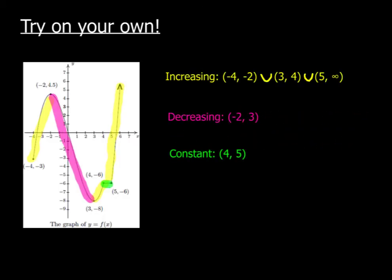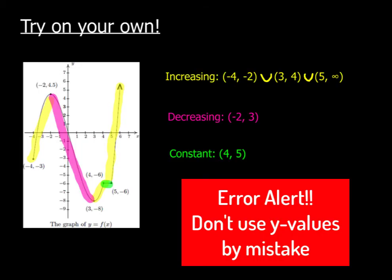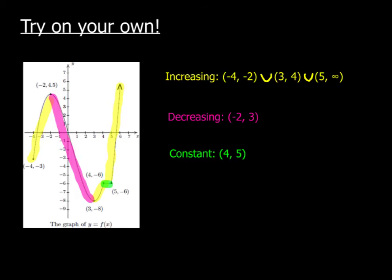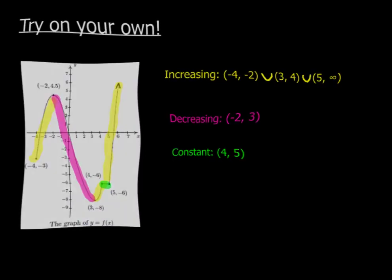All right, so how'd you do, Rockstar? I'm sure you nailed it. You've got all three intervals correct for increasing, the decreasing interval from negative 2 to 3, and the one constant interval from 4 to 5. Just make sure you take your time, because a lot of times people make a careless mistake — they'll use the y-value of a coordinate instead of the x-value. Thanks for watching today. Have a great day. Peace out.